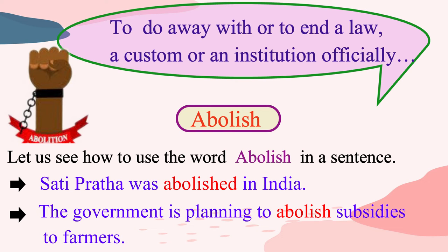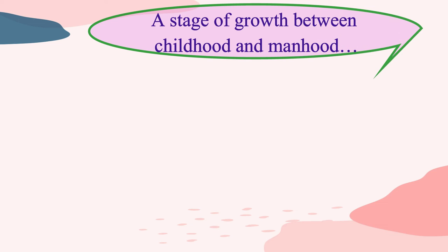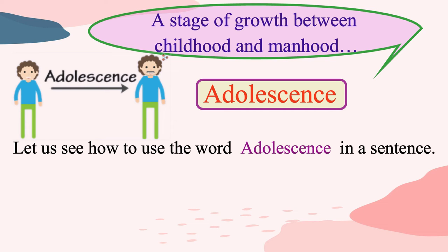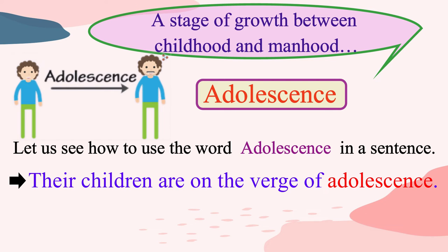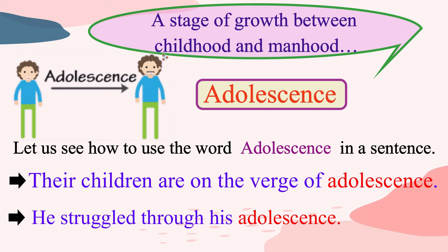Now, let us see the next group of words. Instead of saying a stage of growth between childhood and manhood, we can simply say adolescence. Now, let us see how to use the word adolescence in a sentence. Please repeat after me. Their children are on the verge of adolescence. He struggled through his adolescence.